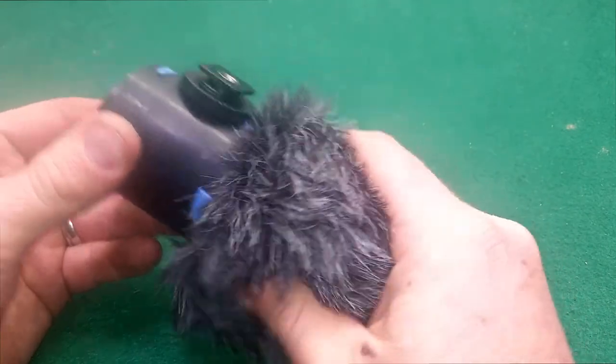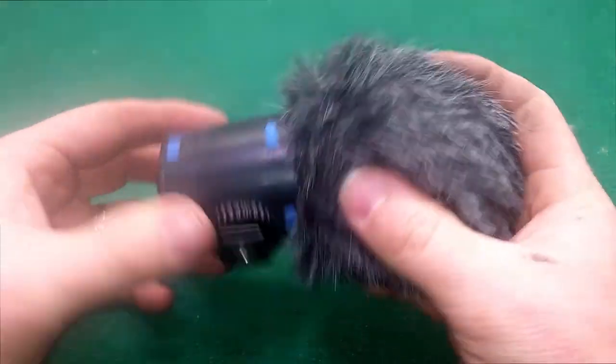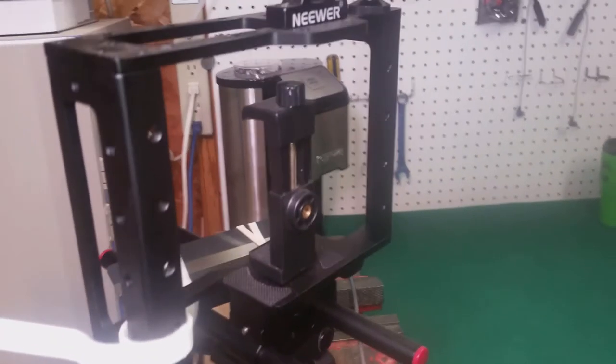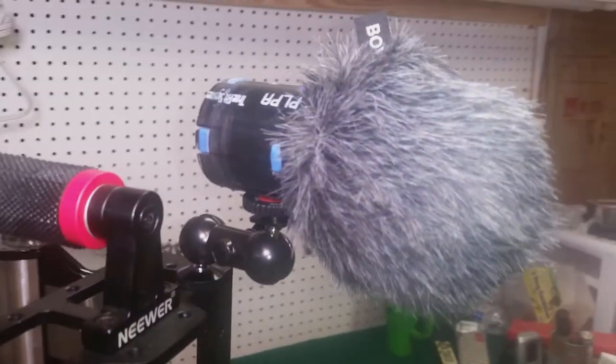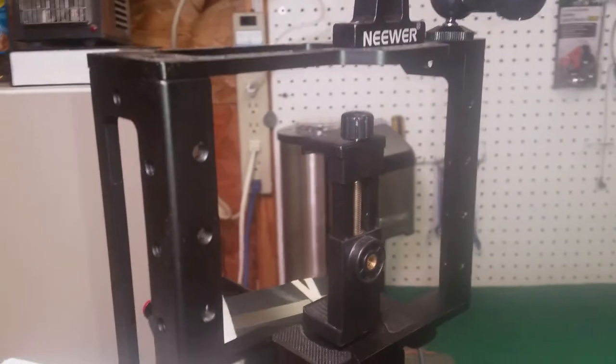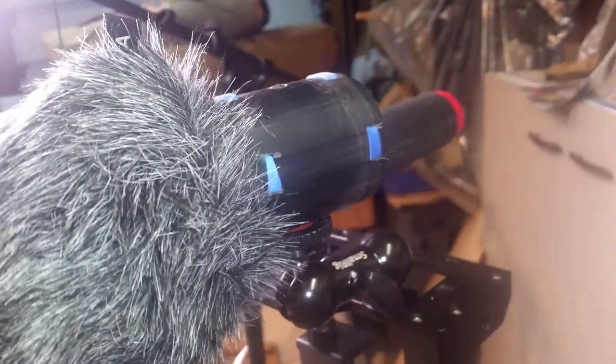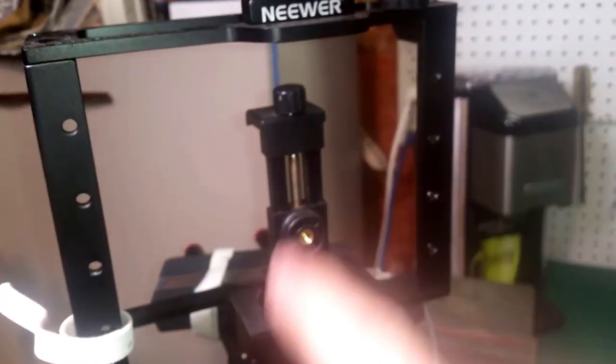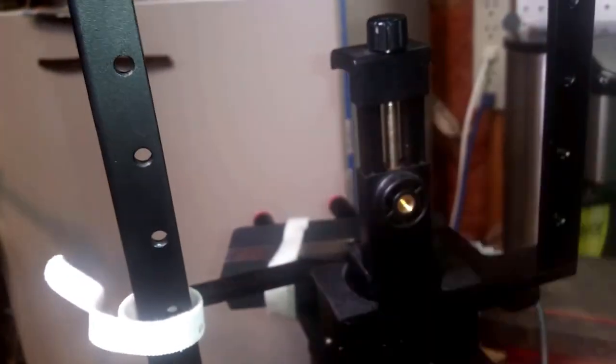All right, friends, check it out. I've got it mounted to my Neewer camera cage. Just got this little magic arm. I've got this camera cage. A lot of my filming gets done inside this camera cage. This cell phone mounts inside there and I can mount my light, I can mount my new shotgun mic there.